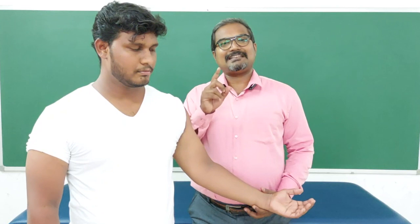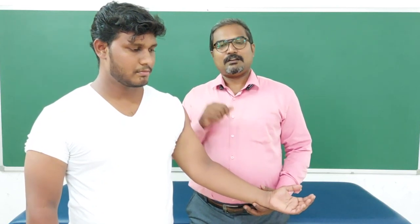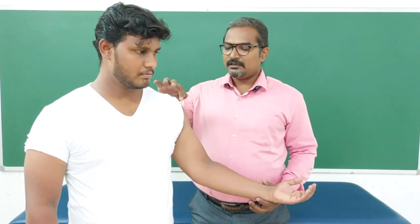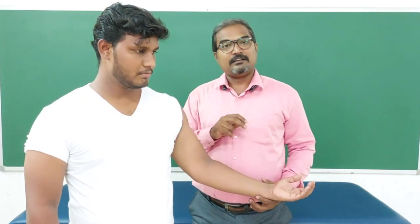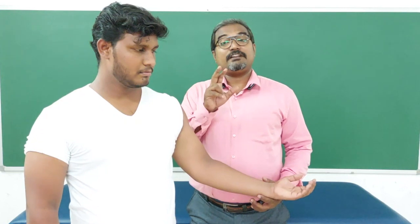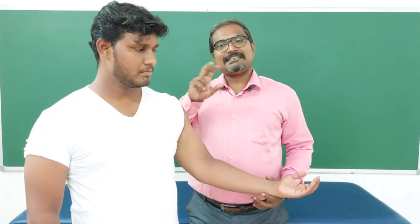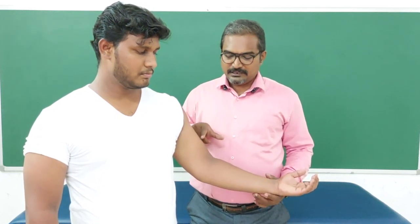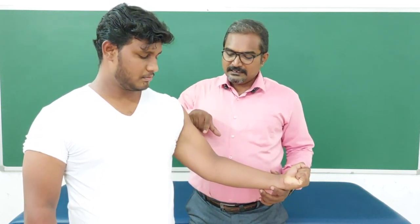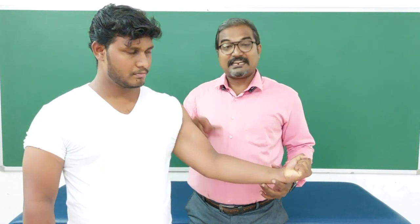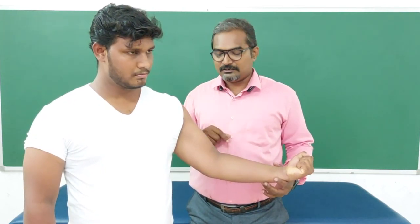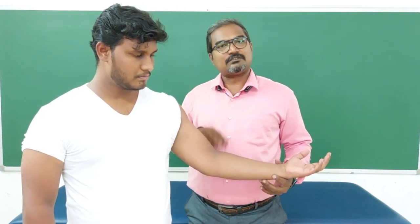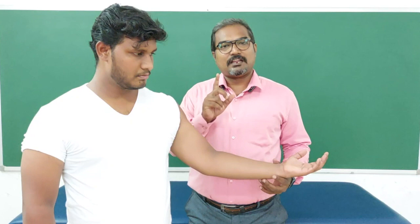Let's look at isometric muscle contraction using the biceps muscle as an example. This biceps muscle has an origin here and an insertion here. When we do an isometric muscle contraction, the muscle tension increases but there is no change in the muscle length. When we relax, the muscle tension reduces but still there is no change in the muscle length — this is called isometric muscle contraction.